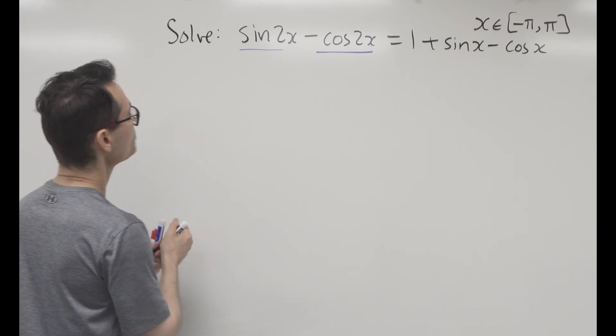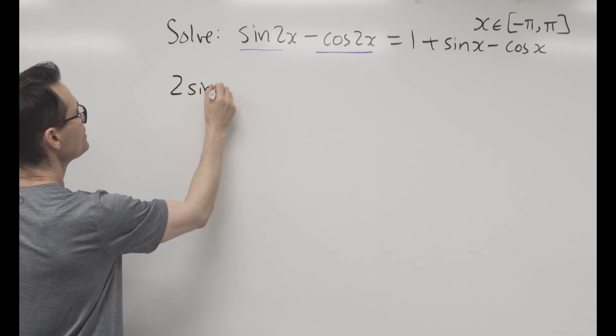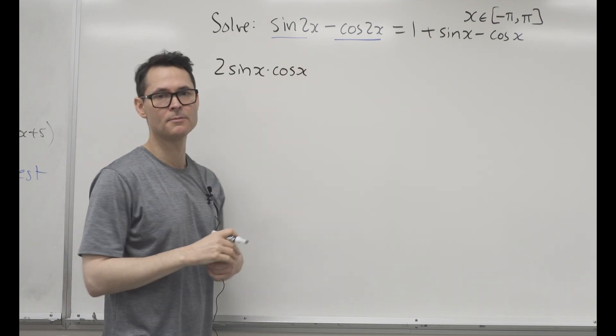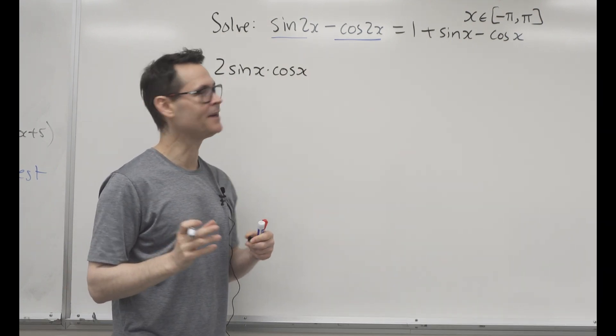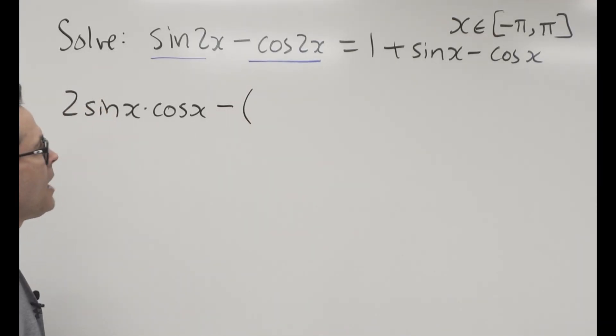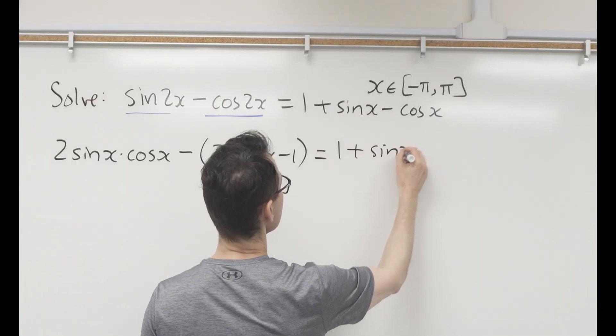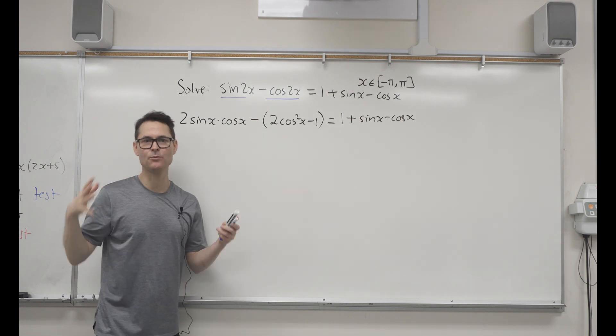All right, so what I'm gonna do: double sine is pretty easy, it's just 2 sine x times cosine x. There's only one option. Double cos has a few options, and usually doesn't really matter which one you choose, by the way. So I'm just gonna choose, for no particular reason, this one: 2 cosine squared x minus 1. 1 plus sine x minus cosine x. Now at least everything is single angle, and then we can do some algebra with this.